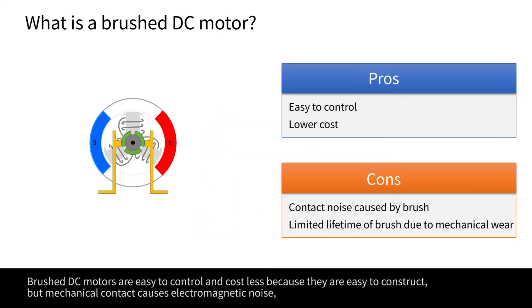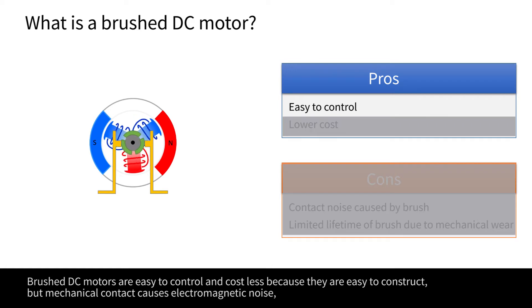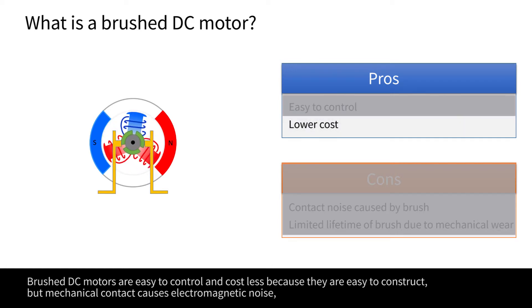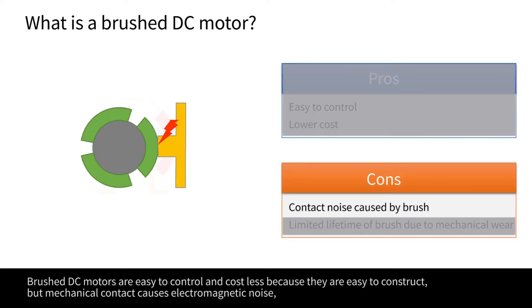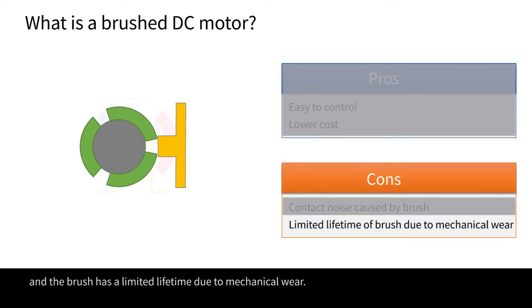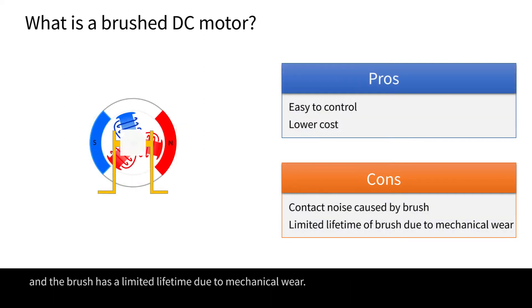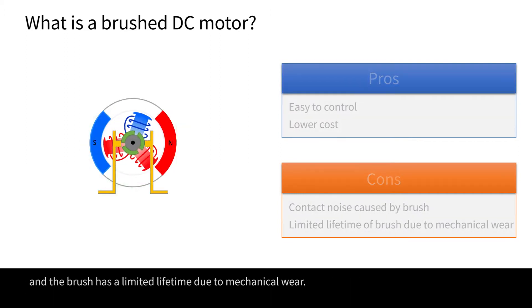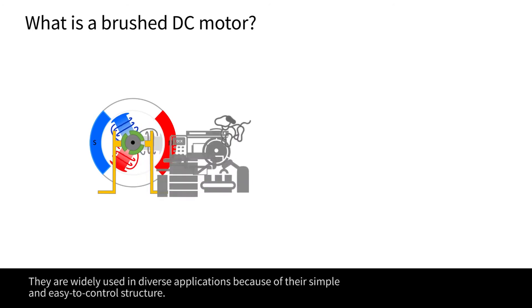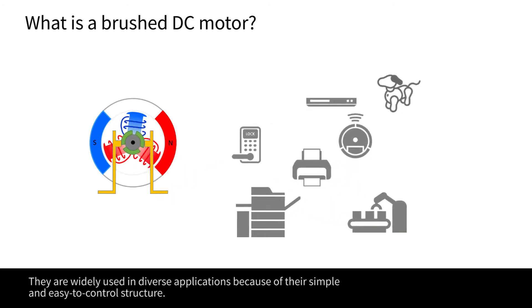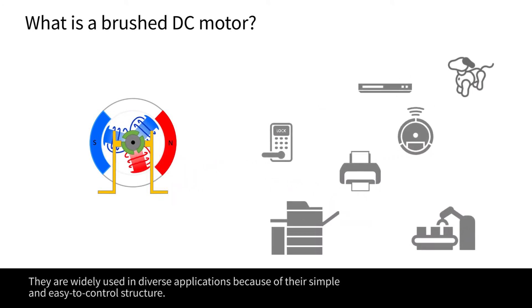Brushed DC motors are easy to control and cost less, because they are easy to construct, but mechanical contact causes electromagnetic noise, and the brush has a limited lifetime due to mechanical wear. They are widely used in diverse applications because of their simple and easy to control structure.